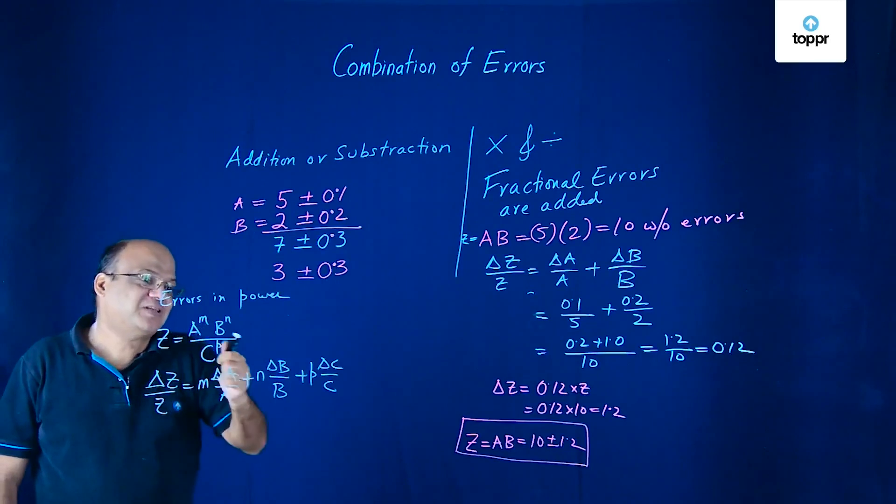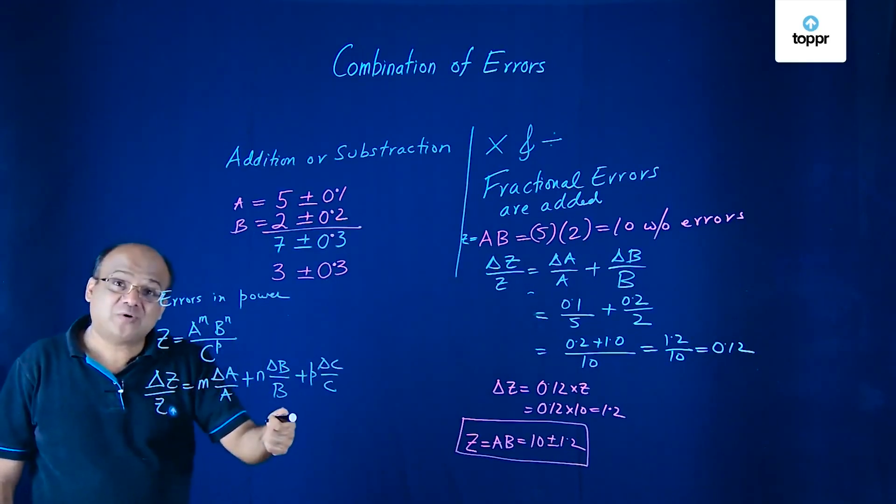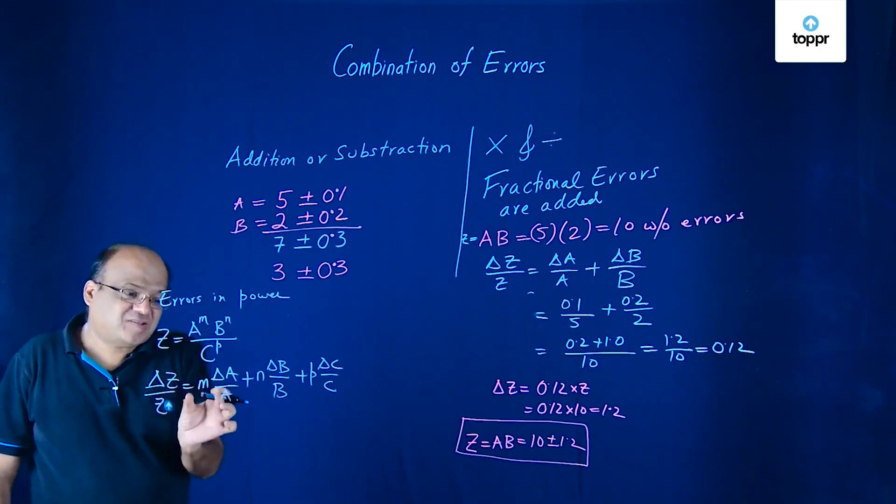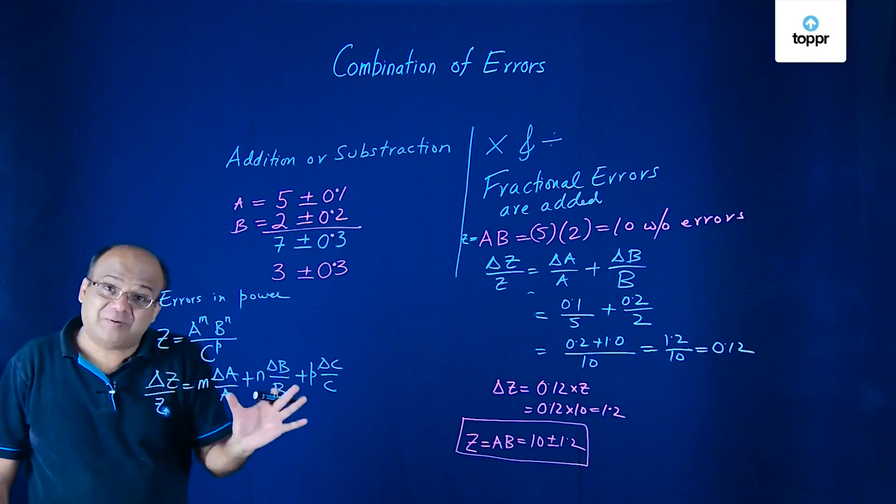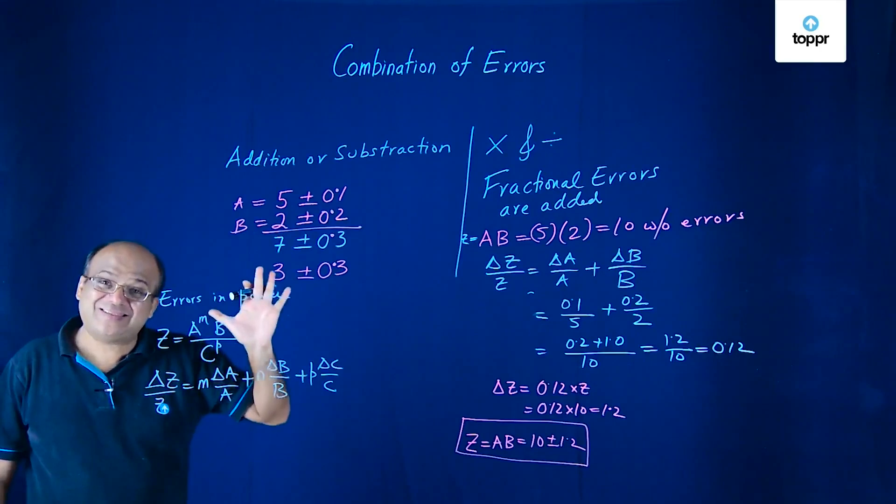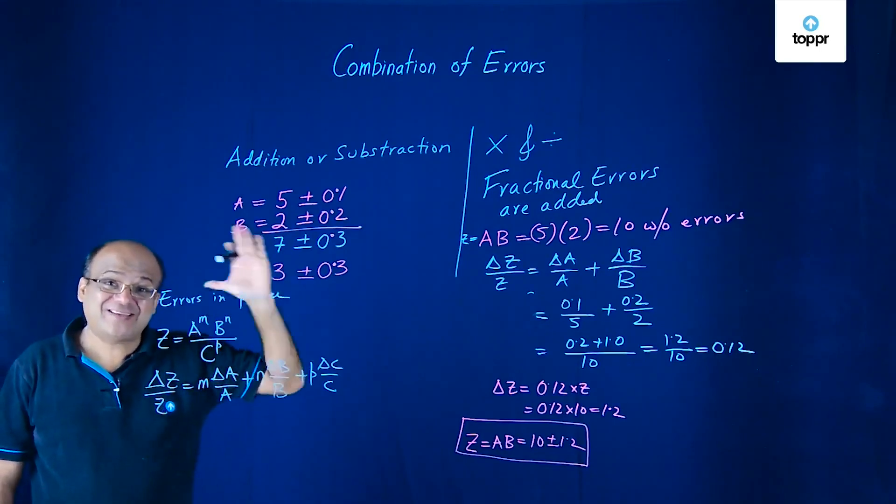So M becomes the coefficient here. N becomes the coefficient here. And P becomes the coefficient here. So this is how we handle errors in power. Errors are always added. Never subtracted.